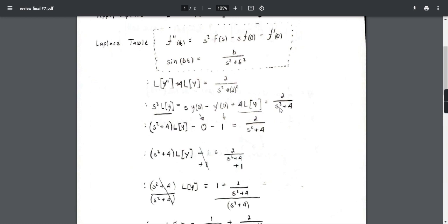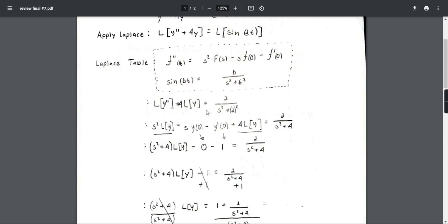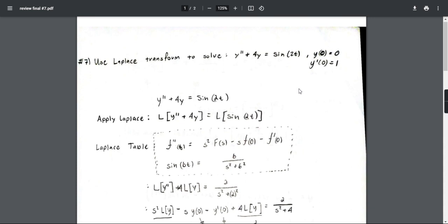Now we apply the initial values. So it's going to be 0, so the s goes away because that is 0. And y prime 0 is equal to 1, which is right here. So that stays.